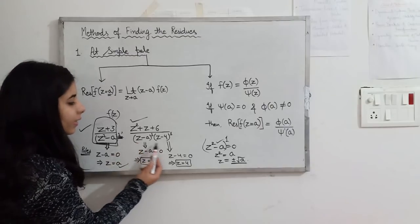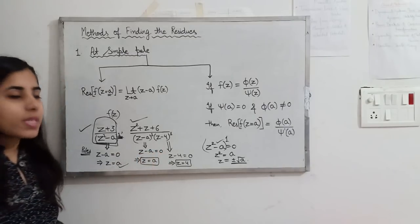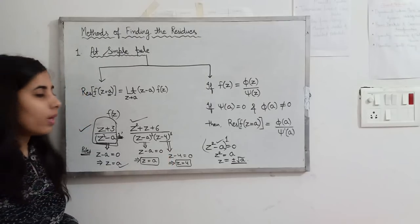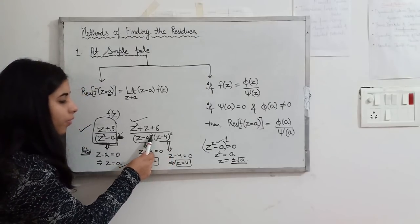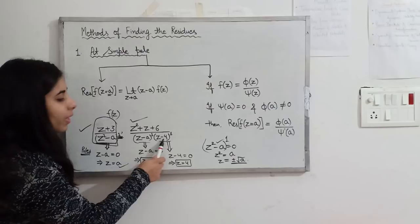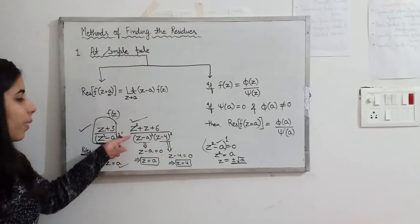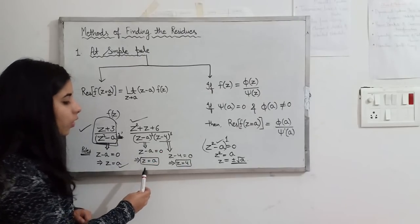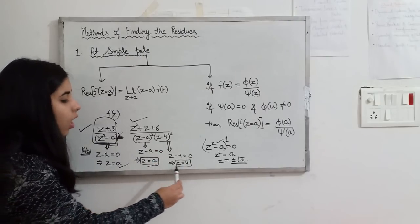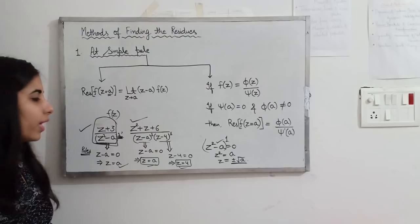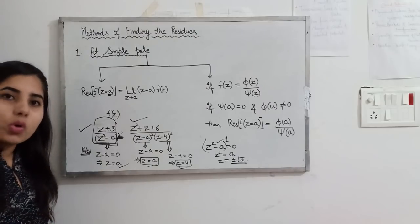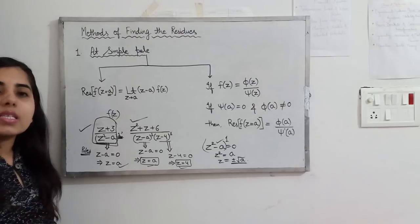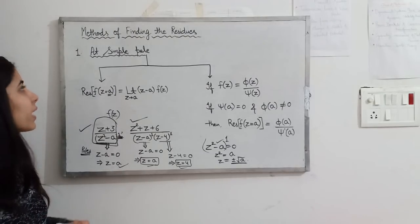In a function with two factors in the denominator — (z − a)¹ and (z − 4)¹ — when you equate each to zero you get z = a and z = 4. Both are simple poles because the overall power of each factor is 1. So the concept of a simple pole is now clear.